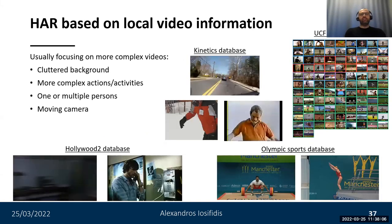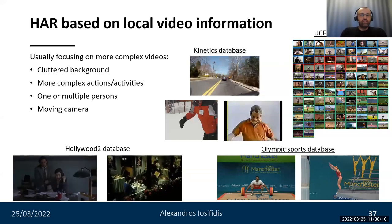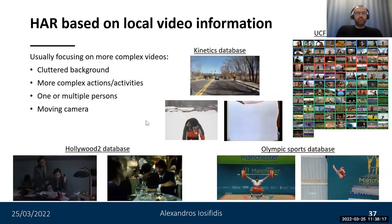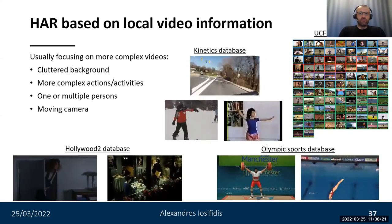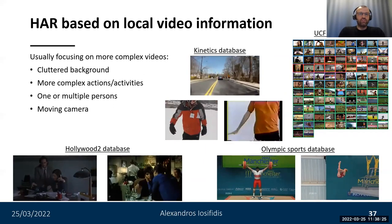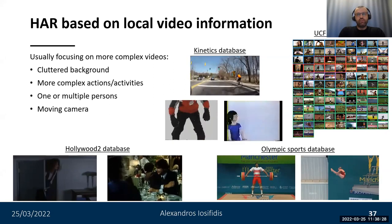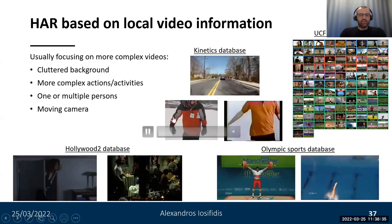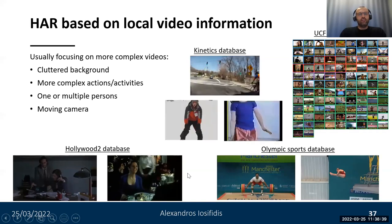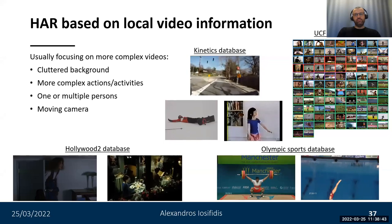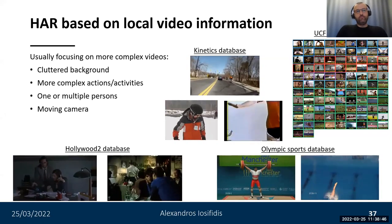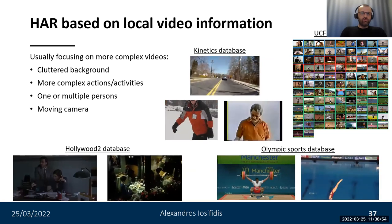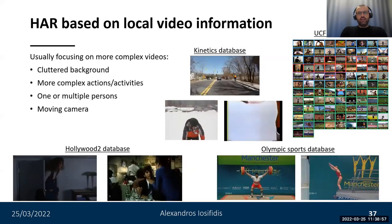Until now we described ways to recognize actions by assuming human body poses can be detected and used to describe actions. However, in the general case of complex actions performed in cluttered backgrounds, captured by moving cameras at different distances, this is not the case. Here we can see example videos from four public databases of human activity recognition, depicting activities which are much more complex compared to the actions in databases focusing on human-centric action recognition described before.